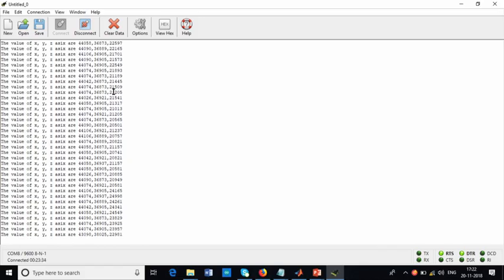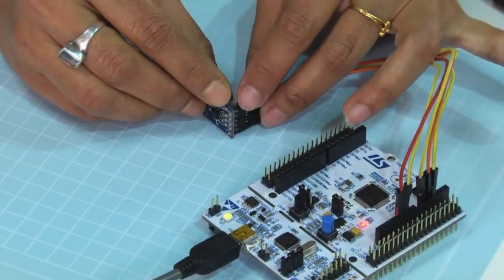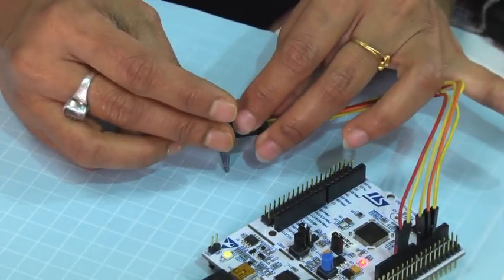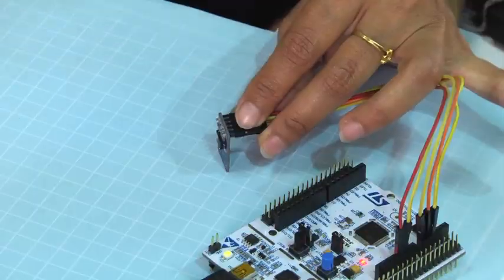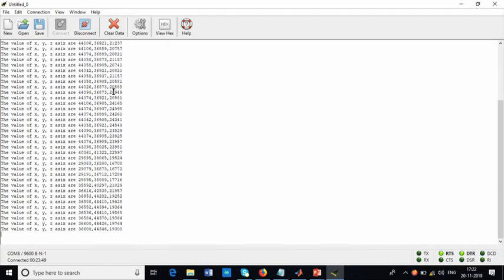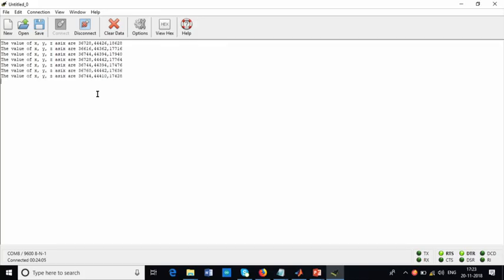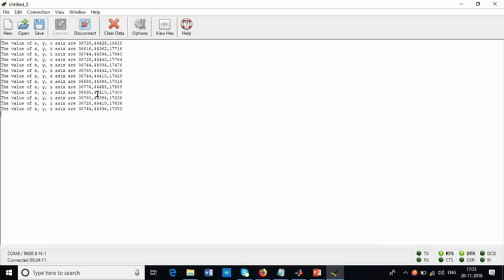Now I will make sure that the y axis value will be maximum. I have put up the accelerometer with y axis at the top. So now you can see in the hyper terminal what value you are getting. Just see what value we are getting. We are getting the x axis value as 36728, the y axis value as 44426 and the z axis as 18628.